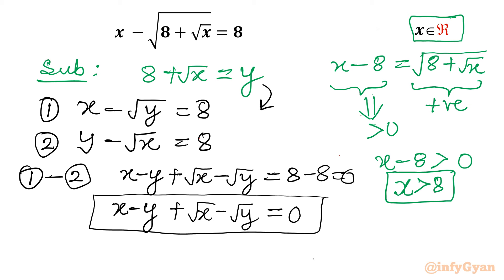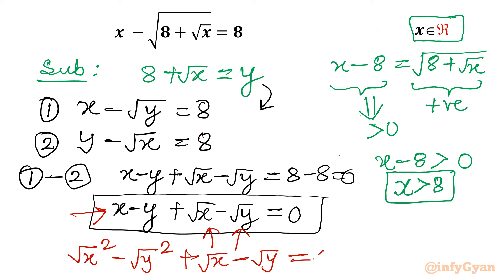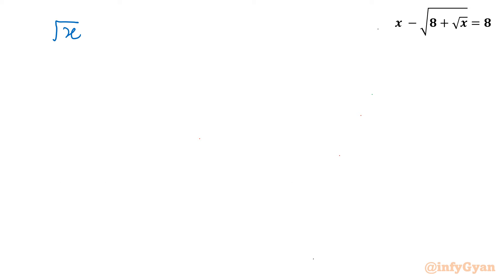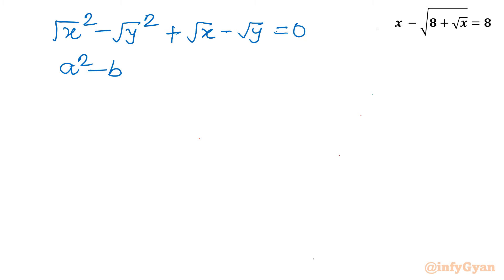This is the equation for which we will find our solutions. Now I will consider one algebraic identity. As you can see, square root x and square root y are involved here, so let me write those terms using squares. I can write our equation as: square root x whole squared, minus square root y whole squared, plus square root x, minus square root y, equal to 0. Now you can see the a squared minus b squared formula applies. The identity is a squared minus b squared equals a plus b times a minus b.